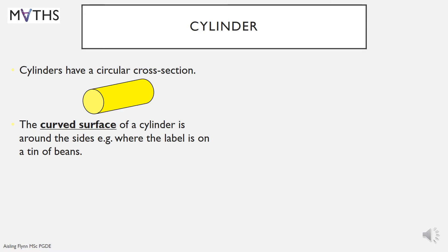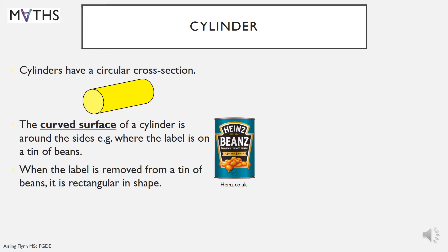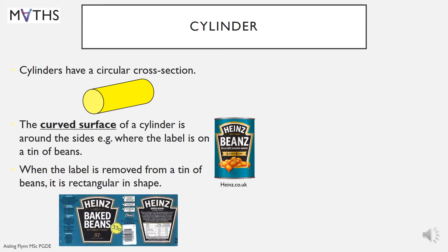The curved surface area of a cylinder is around the sides where the label is on a tin of beans. So imagine a tin of beans, the label is around the sides. It's the curved part, not flat. When the label is removed from a tin of beans, it is rectangular in shape. So the net of a cylinder should look like that. You have the top and the bottom, which are circles, and then the label of the tin of beans, or the curved surface area, which turns out to be a rectangle.